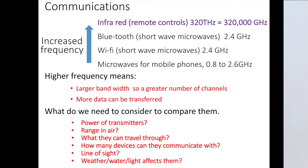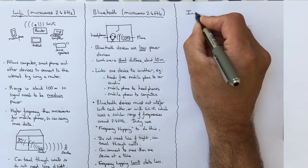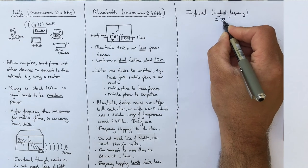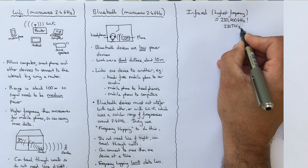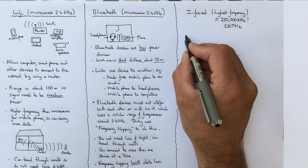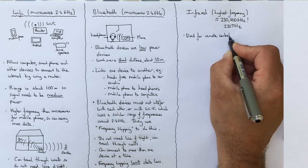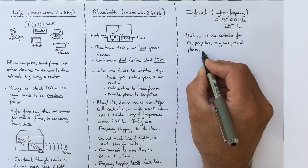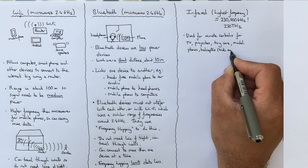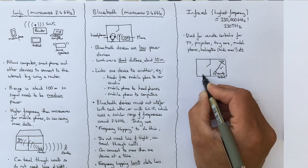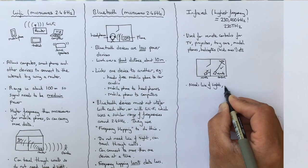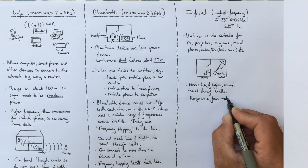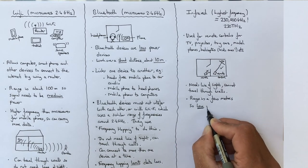Finally, we're onto infrared for remote controls. So infrared has a much higher frequency, a whopping 230,000 GHz or 230 Terahertz. Infrared is used in remote controls for transferring data to TVs, projectors, toy cars, model planes, helicopters, these are kids ones, etc. The infrared from the remote control needs to be in line of sight with the object. It can't travel through walls. This means it only needs a range of a few meters, so is a low powered device.